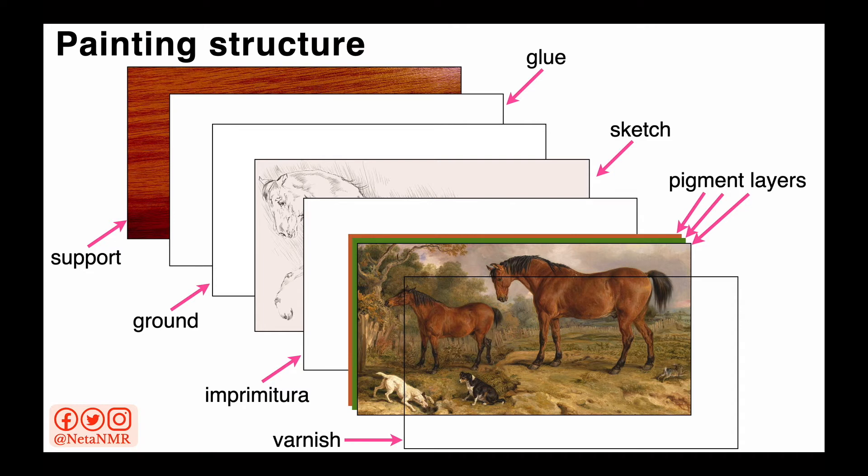It is important to note that while this is the general structure of a painting, and all these are possible layers in a painting structure, that doesn't mean that every painting consists of every single one of these elements. They can vary from painting to painting depending on the artist's technique and the medium and materials they use for their artistic expression.